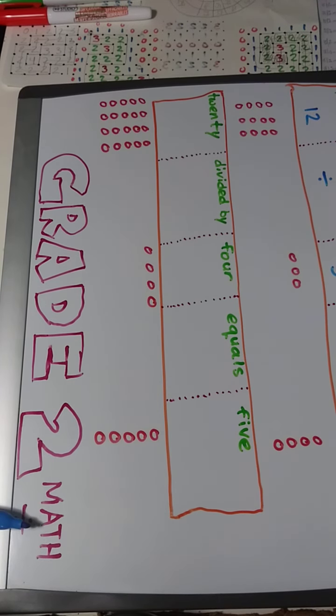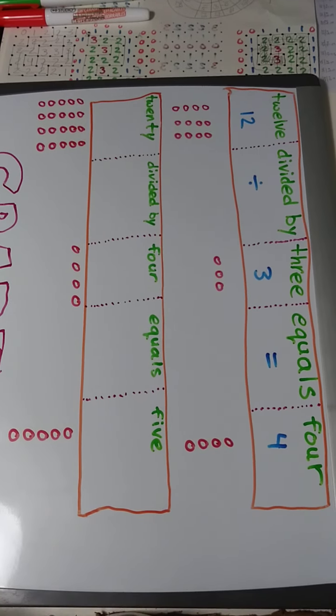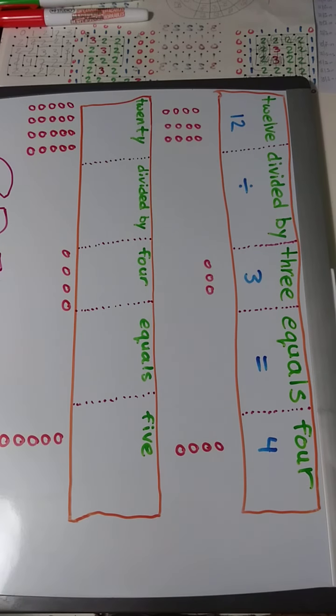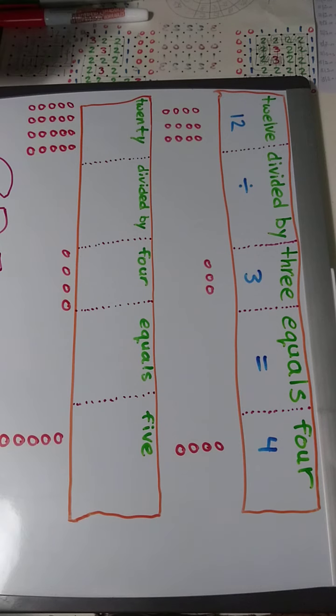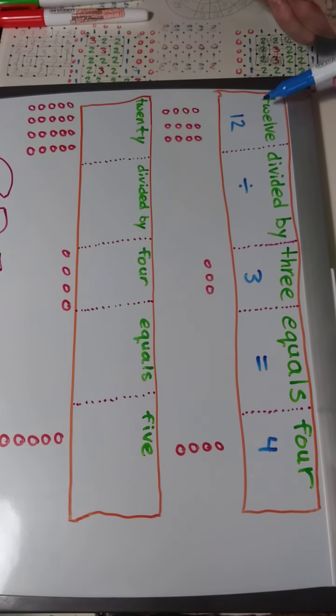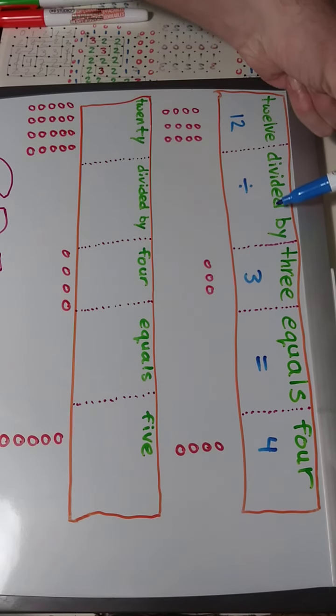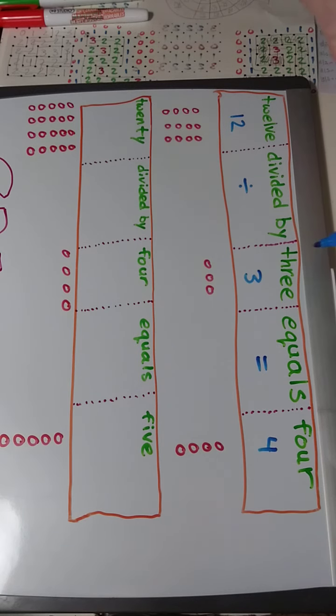Grade 2 Math Division. Ok, at the top here we have 12 divided by 3 equals 4.